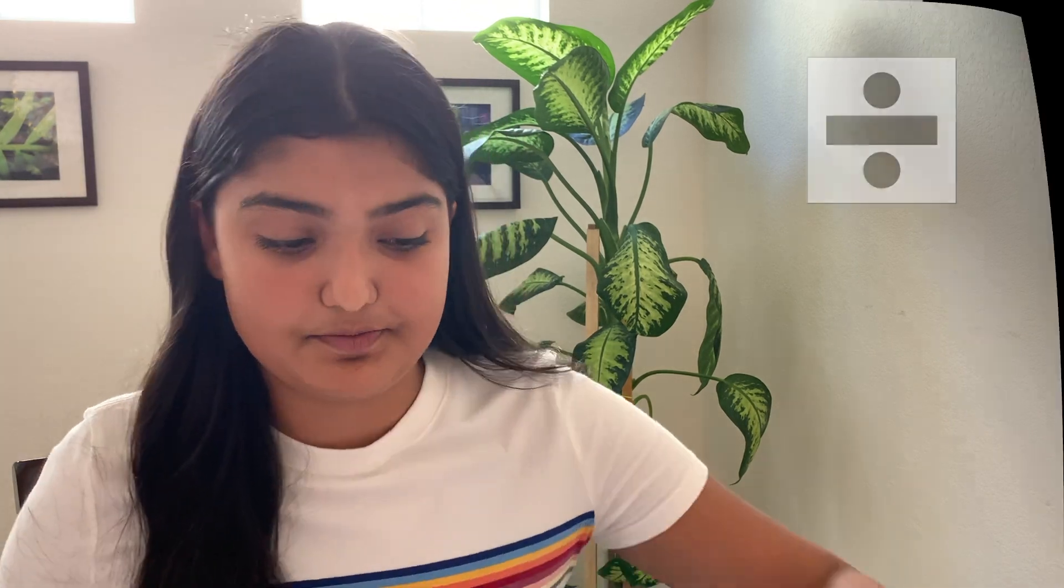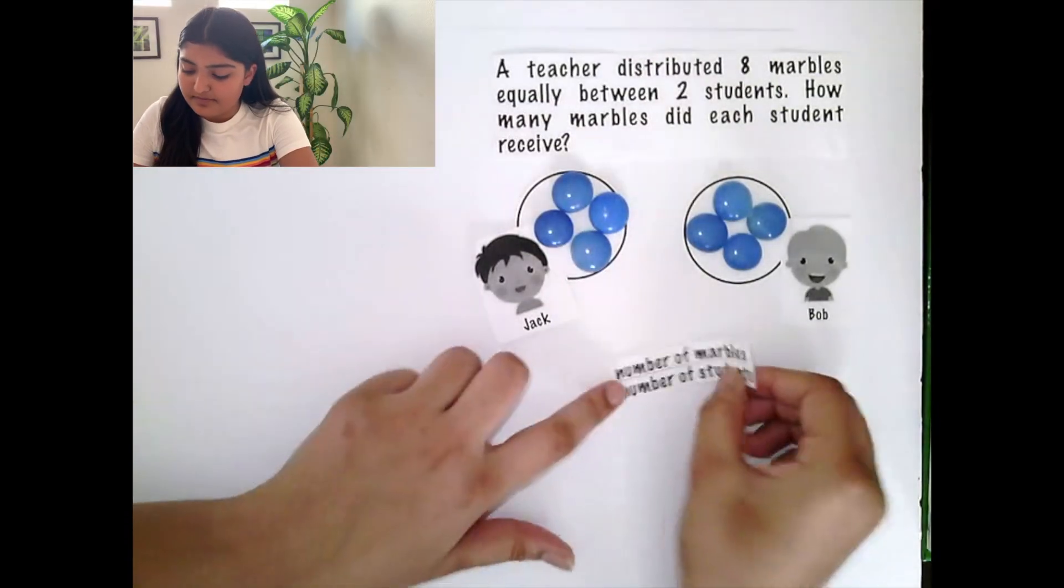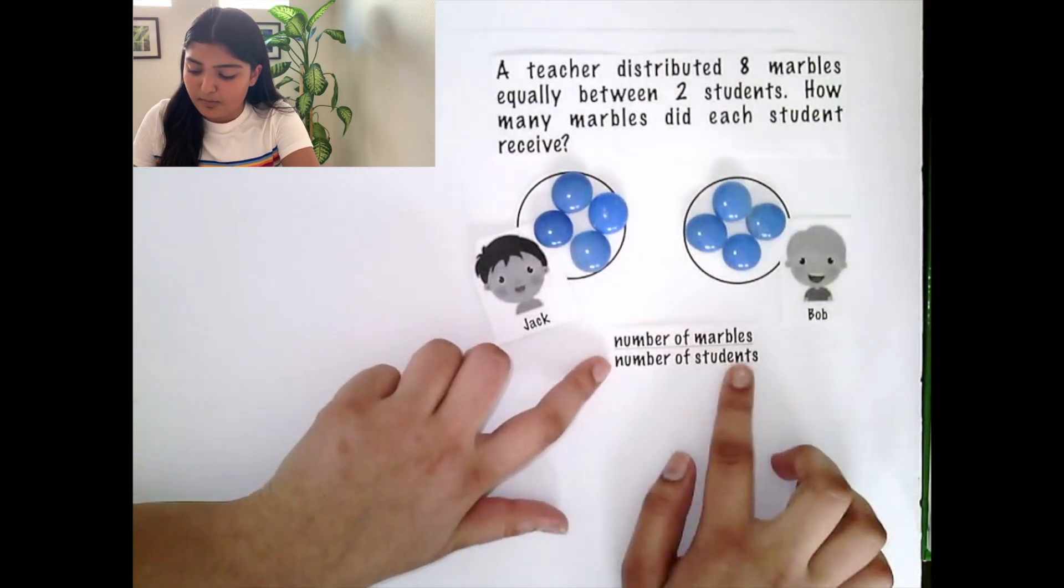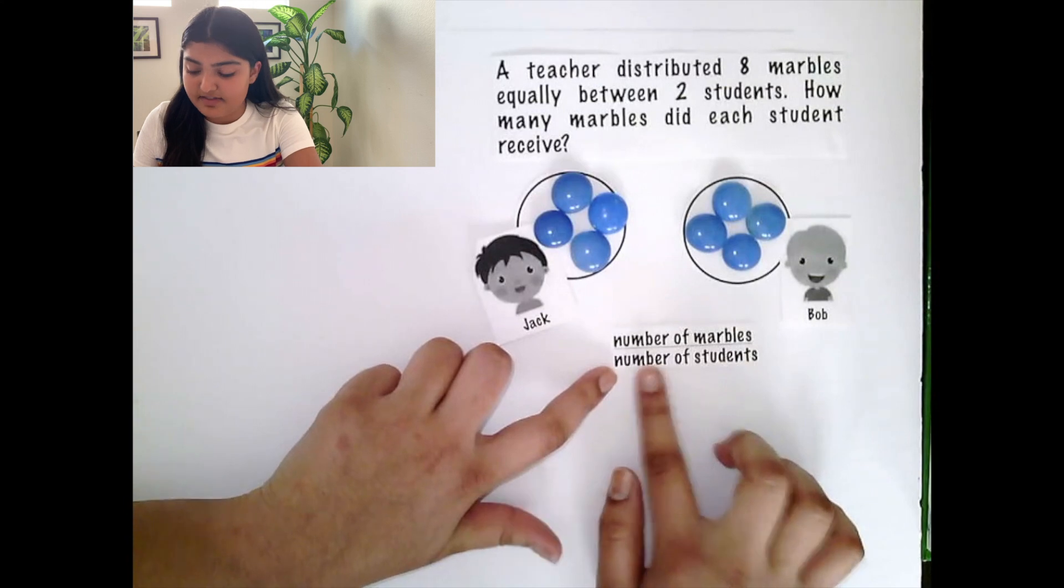So how do we do this? We use an operation called division. In this problem, we took the number of marbles and we divided them by the number of students.